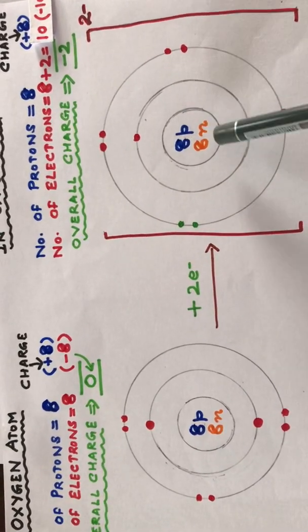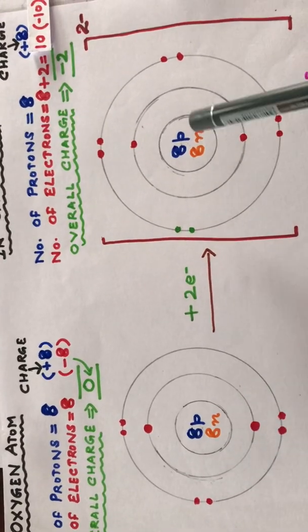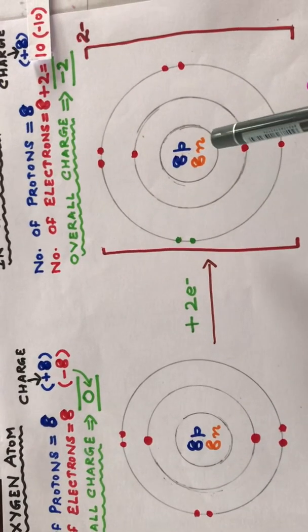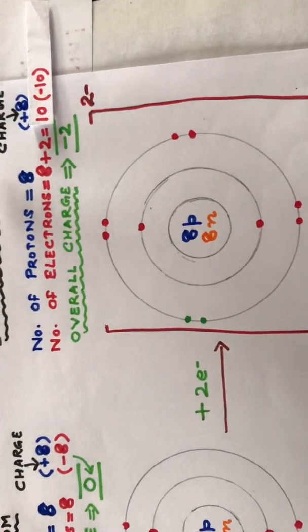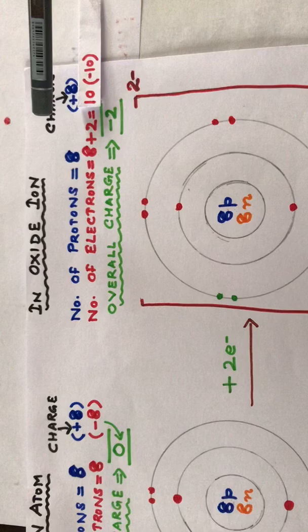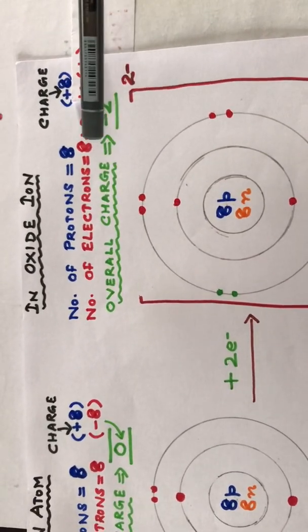Eight protons and eight neutrons in the oxygen atom as well as the ion. However, the number of electrons has changed. The number of protons still remains eight and they carry a charge of plus eight. The number of electrons has now increased from eight to ten.